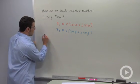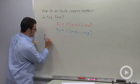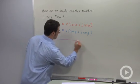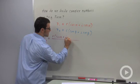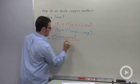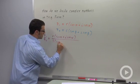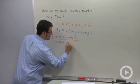So let me start with Z1 over Z2. That's going to be R cosine alpha plus I sine alpha, over S cosine beta plus I sine beta.